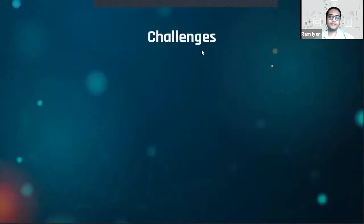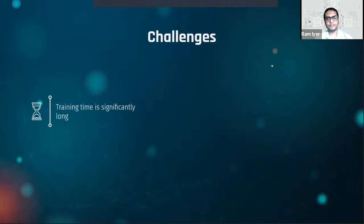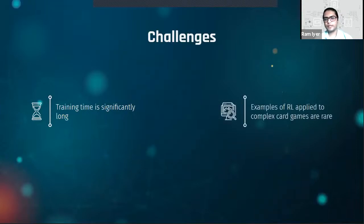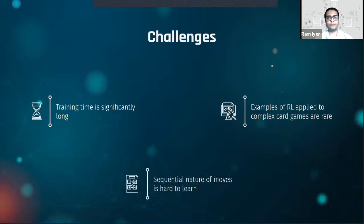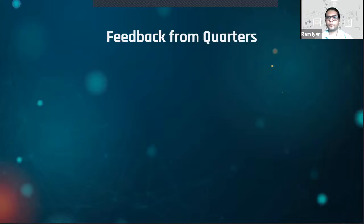We faced three major challenges: first, training time is significantly long — if we make a change in the algorithm, we need to wait until the following day to see results. Second, examples of reinforcement learning applied to complex card games are rare, and algorithms from other game genres are hard to directly apply because state and action spaces are unique to each game. Third, the sequential nature of card plays in Slay the Spire is difficult even for humans to learn, much more so for the AI.